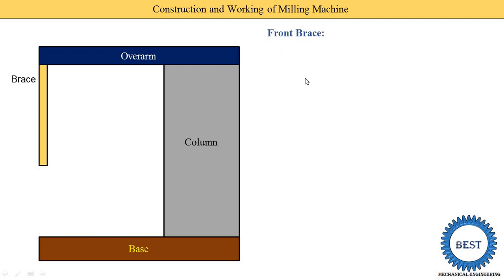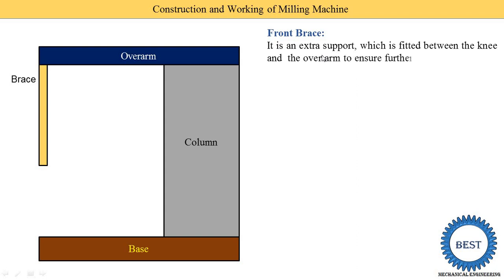The next component is the brace — in some books it is written as the front brace. It is an extra support fitted between the knee and overarm to ensure further rigidity to the other end of the arbour. These braces connect the overarm and the knee, giving more rigidity to the system.